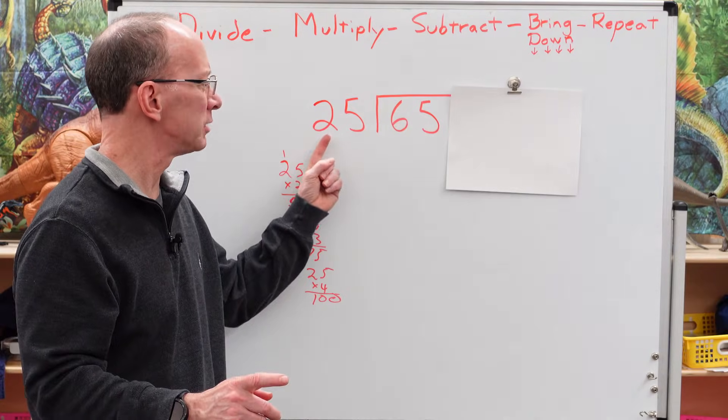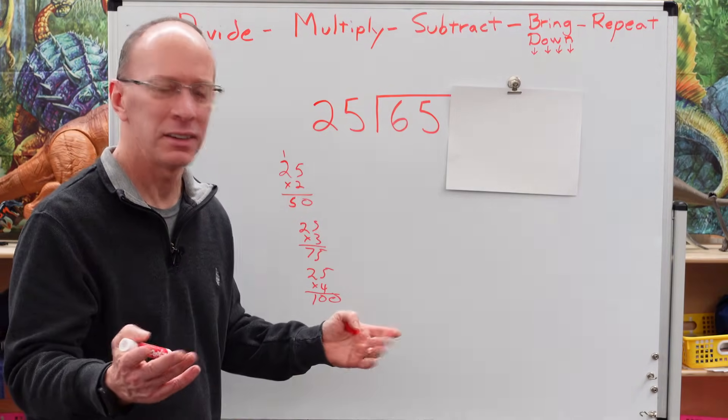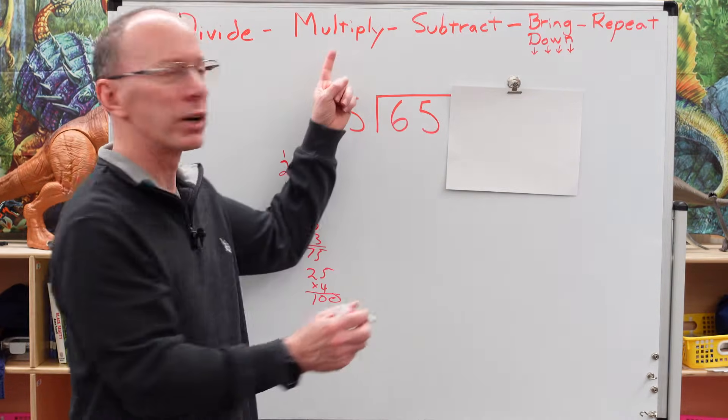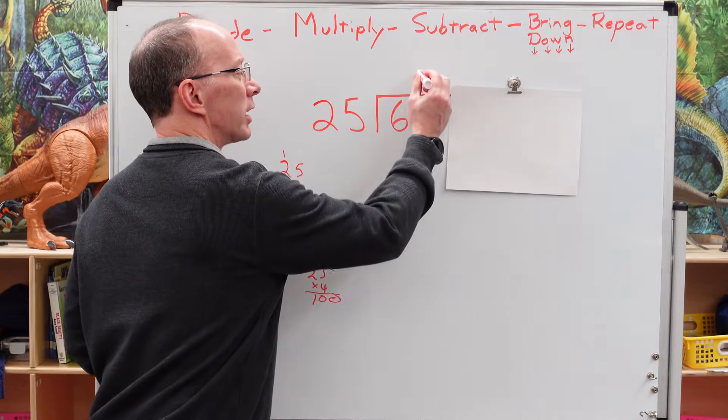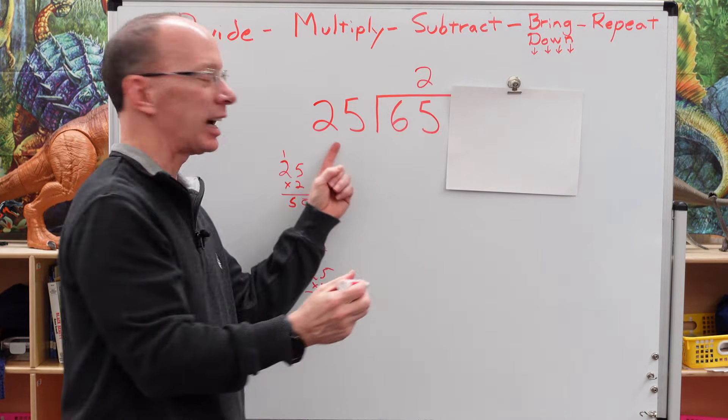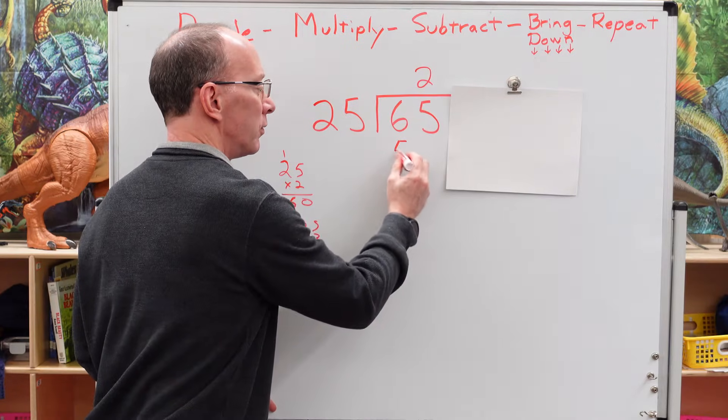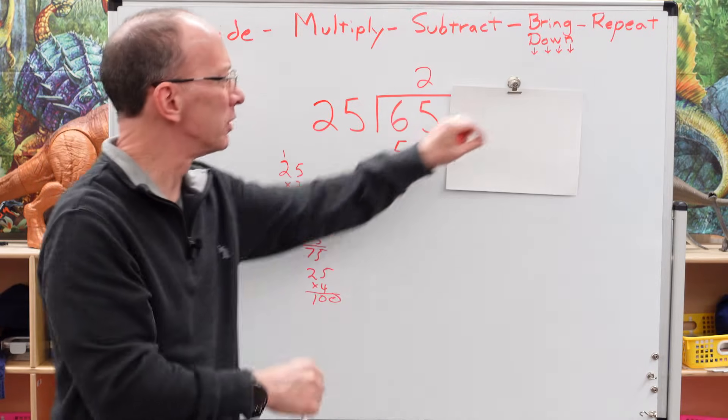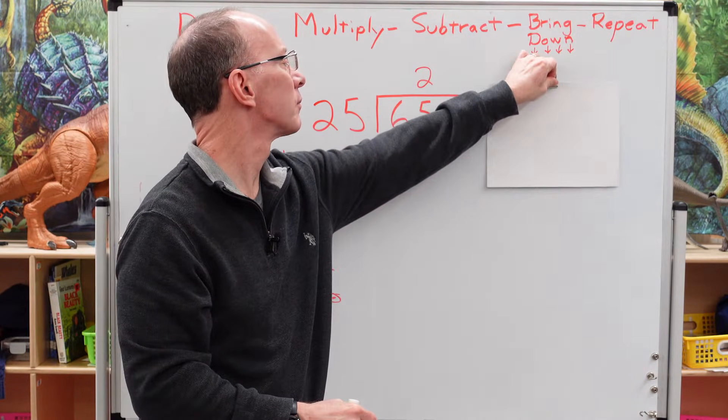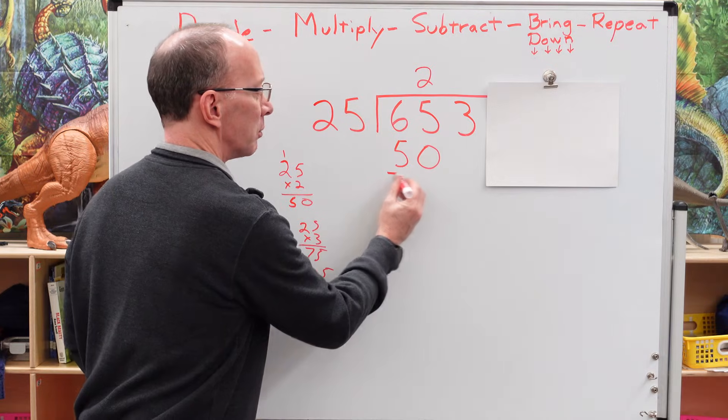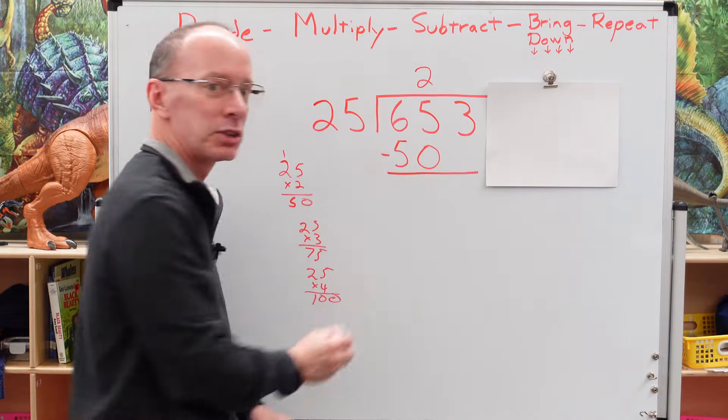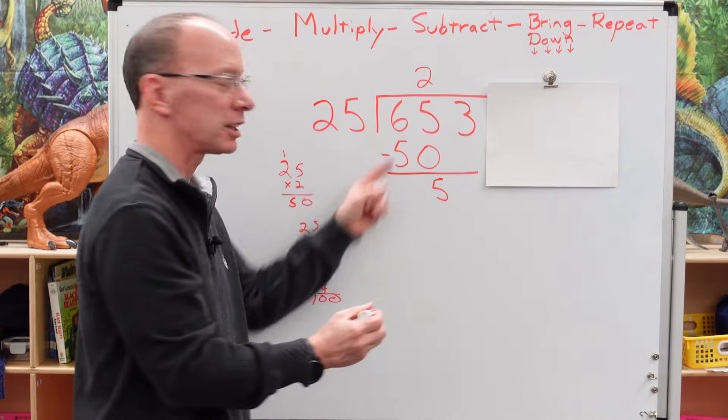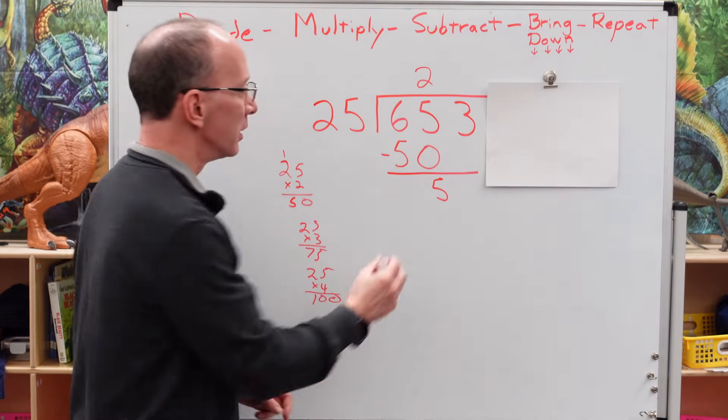Our best guess of putting 25 into 65, what do you think it is? That's right, it'd probably be about 50. So let's put a 2 right here. We're going to multiply. That's our next step in our process. Two times 25 would be 50. Now I'm going to subtract. Five minus zero is five. Six minus five is one.